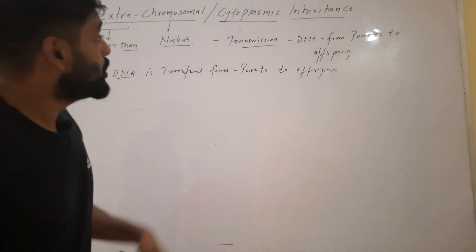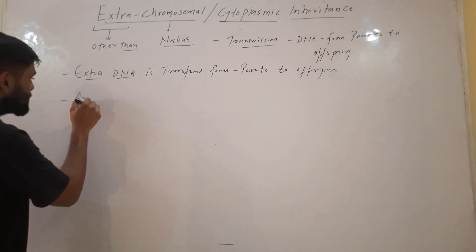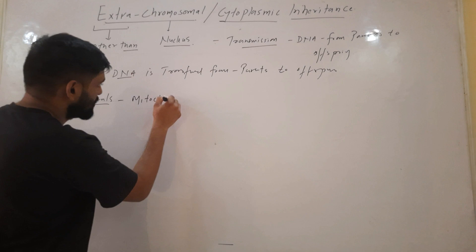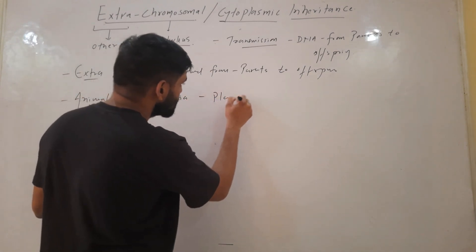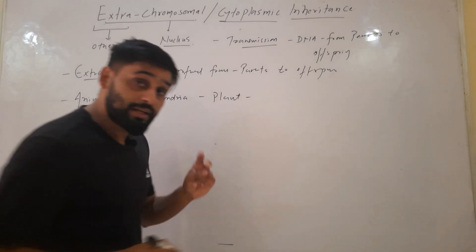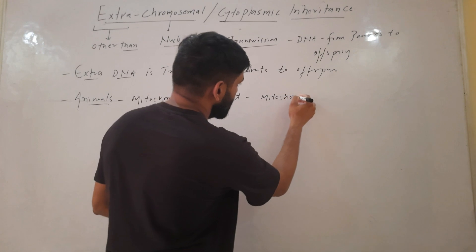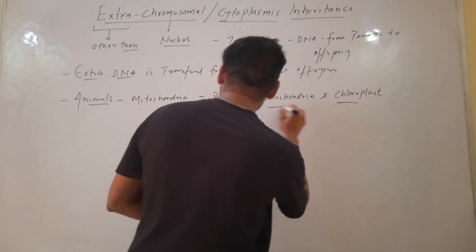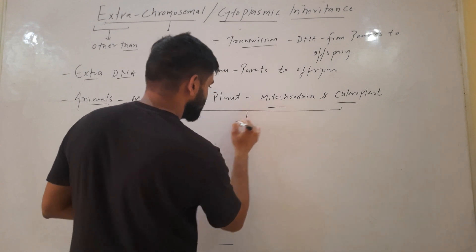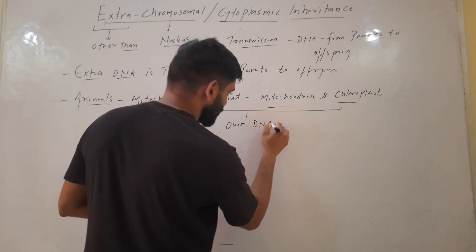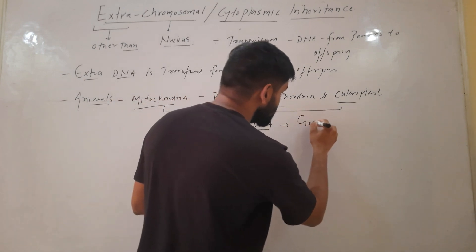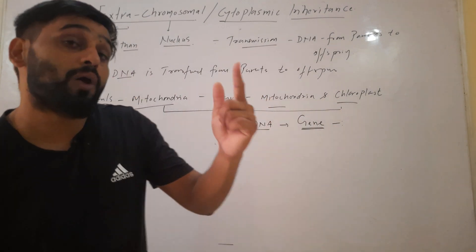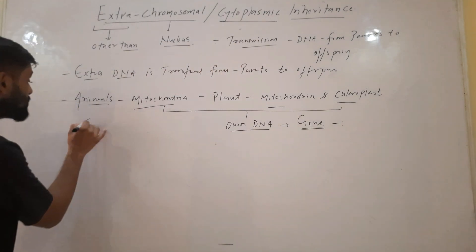Firstly, let us understand what this extra DNA is. In the case of animals, there is an organelle called mitochondria, and in the case of plants there are two organelles: mitochondria and chloroplast. These organelles have their own DNA, which means they have their own genes, and these genes are present outside the nucleus — they are present in the cytoplasm.